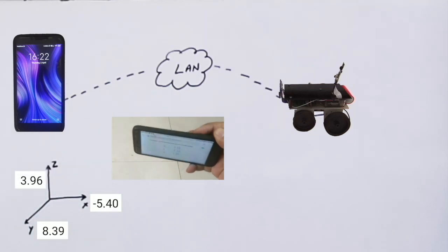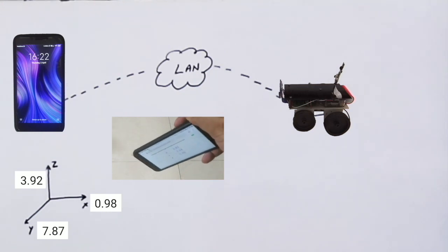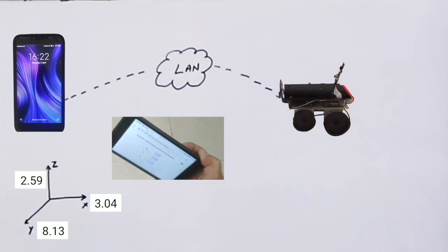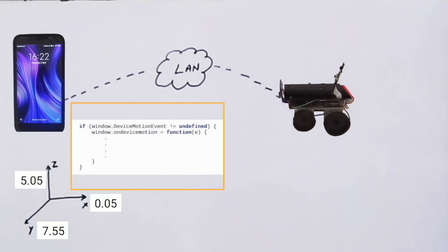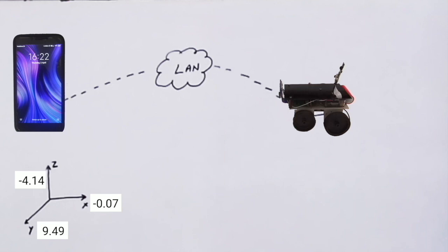When the phone tilts or moves, these XYZ values corresponding to the three dimensions change. Certain JavaScript objects and event handlers make it possible to read sensor data like accelerometer and gyroscope directly from the browser.